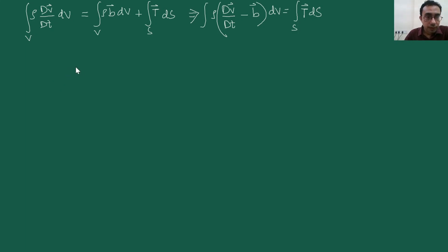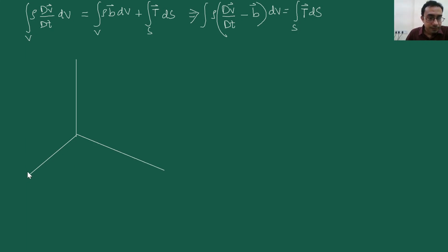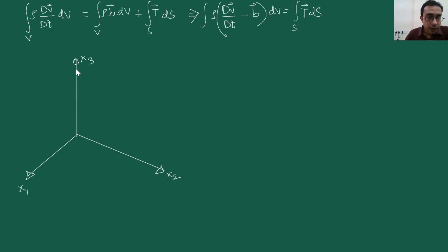First of all, we set up our coordinate axis like this. Let's say this is our x1, x2, x3, and then let's draw a tetrahedron here.